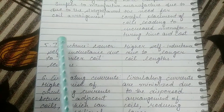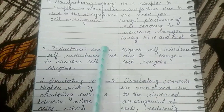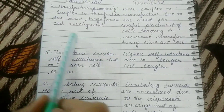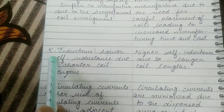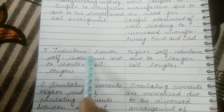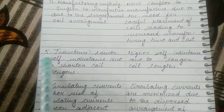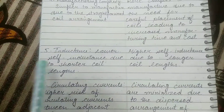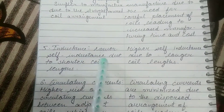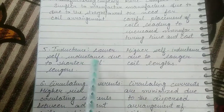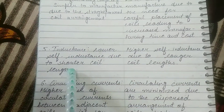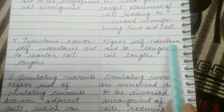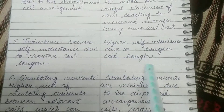The fifth difference is self-inductance. Concentrated windings have lower self-inductance due to the shorter coil length. Self-inductance can be understood as follows: when current starts flowing through a wire, it creates a magnetic field around the wire. If we try to change the amount of current, that magnetic field resists the change — the wire's own magnetic field resisting changes in the current flowing through it. Distributed windings have higher self-inductance due to the longer coil length.